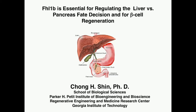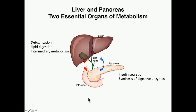Today I'm going to talk about the role of FHL1B — Four and a Half LIM Domains 1B — in regulating the liver versus pancreas fate decision and beta cell regeneration. The liver and the pancreas are two essential organs of our body that regulate essential metabolism, including glucose metabolism. It is critical to understand how these two organs are generated or regenerated upon injury.